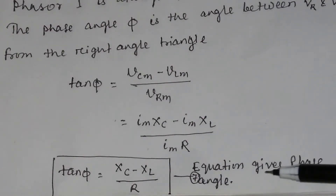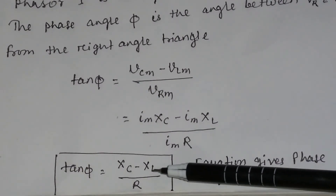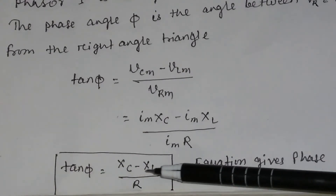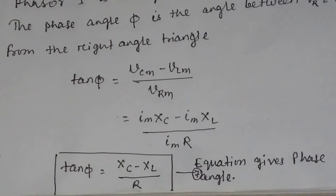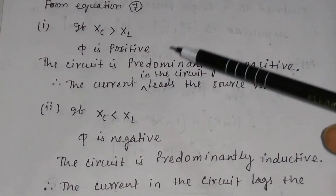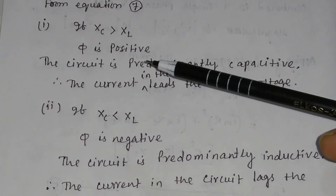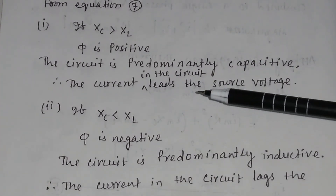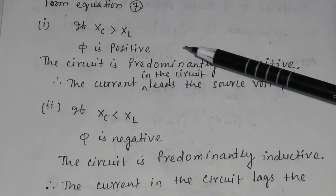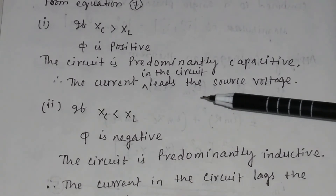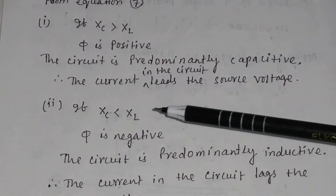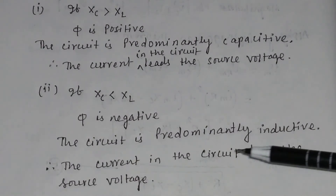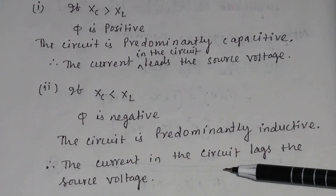From the phase angle equation: if Xc > XL, then tan φ is positive, φ is positive, and the circuit is predominantly capacitive — the current leads the source voltage. If Xc < XL, then tan φ is negative, φ is negative, and the circuit is predominantly inductive — the current lags the source voltage.